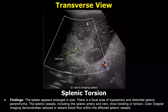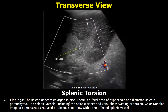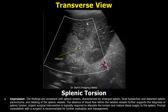Here is a case of splenic torsion. In the findings, the spleen appears enlarged. There is a focal area of hypoechoic and distorted splenic parenchyma. The splenic vessels, including the splenic artery and vein, show twisting or torsion. Color Doppler imaging demonstrates reduced or absent blood flow within the affected splenic vessels. In the impression, you can write about the focal hypoechoic and distorted splenic parenchyma, twisting of splenic vessels, absence of blood flow within these twisted vessels, and clinical correlation.